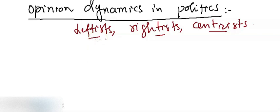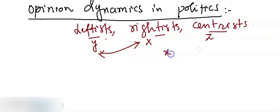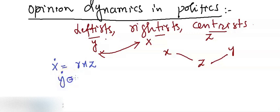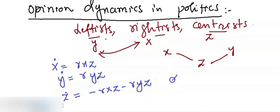Let x be the fraction of rightists, y be the fraction of leftists, and z be the fraction of centrists. These extremists don't communicate with each other, but whenever anyone from x or y communicates with z, either one persuades or loses. The model is given by: x-dot equals r times xz, y-dot equals r times yz, and z-dot equals minus r times xz minus r times yz. If r is positive, the extremists always win and persuade the centrists to move to their side.